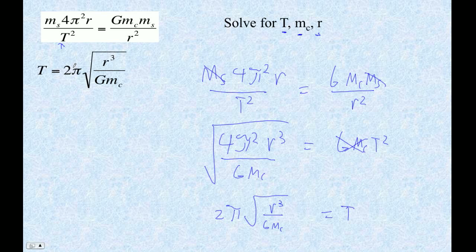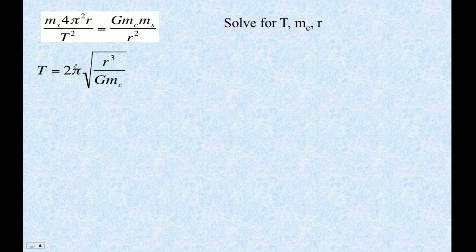That's what the solution is. And then this is how you type it into your calculator: 2 times pi times radical sign, left parenthesis, r raised to the third divided by parentheses, you've got to put the denominator in parentheses, g times m, right parenthesis to close. These guys close, and then these guys close. Write this down. This is one of the hardest ones to do.